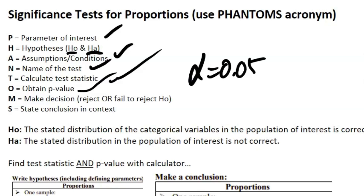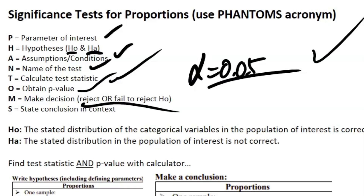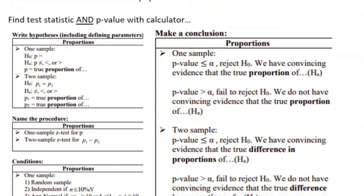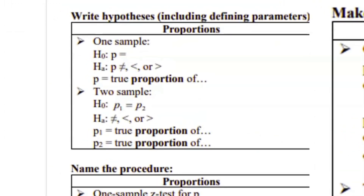Your p-value determines whether you reject your null hypothesis or fail to reject it. Usually you're working with an alpha value of 0.05: if the p-value is below 0.05 it's statistically significant and you reject H₀; if it's above, you fail to reject. Make your Decision, then state your conclusion in context — that's when you reference Hₐ. When making the decision you don't need to mention H₀ in context, but the conclusion referencing Hₐ must be in context.